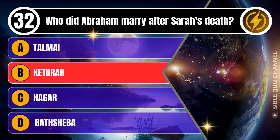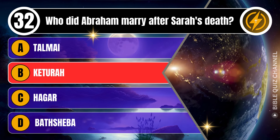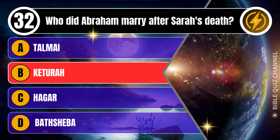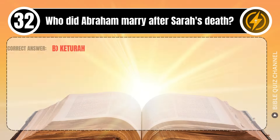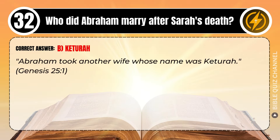Correct answer: B. Keturah. Explaining the Bible — Abraham took another wife whose name was Keturah. Genesis, chapter 25, verse 1.